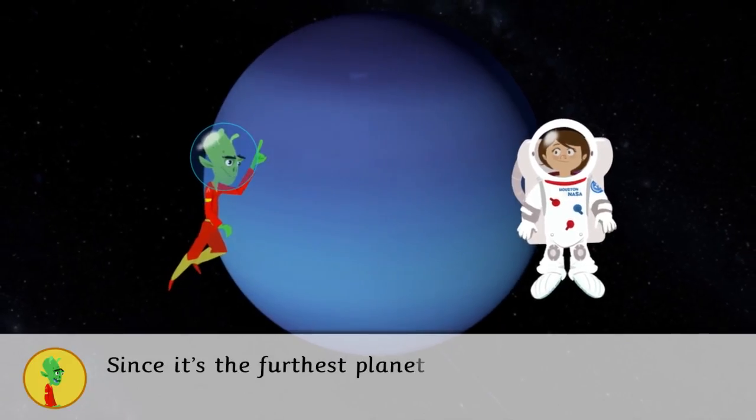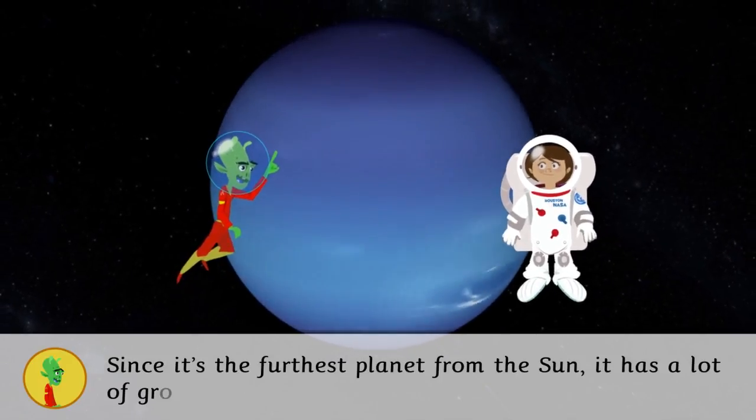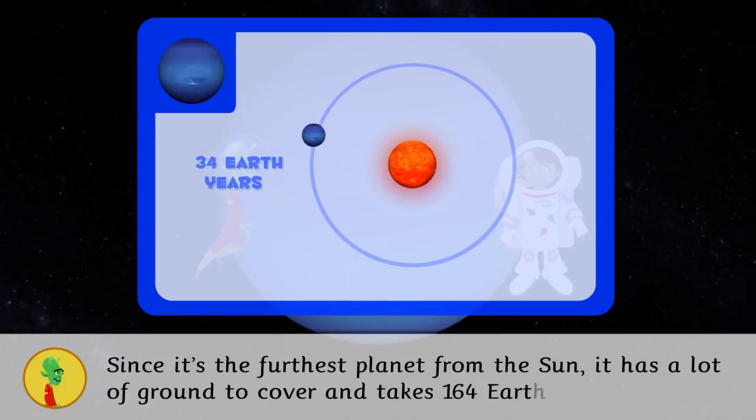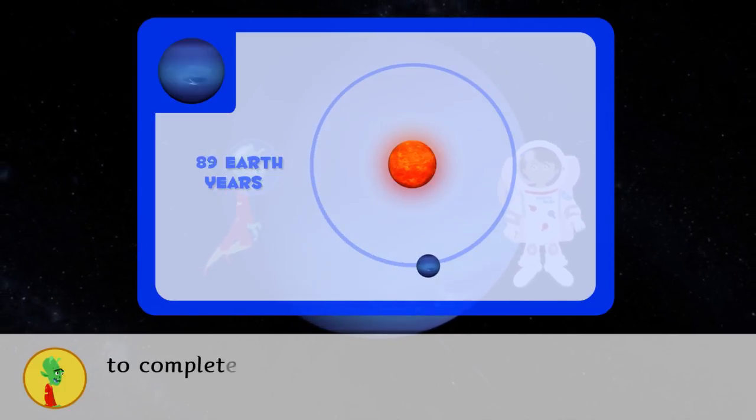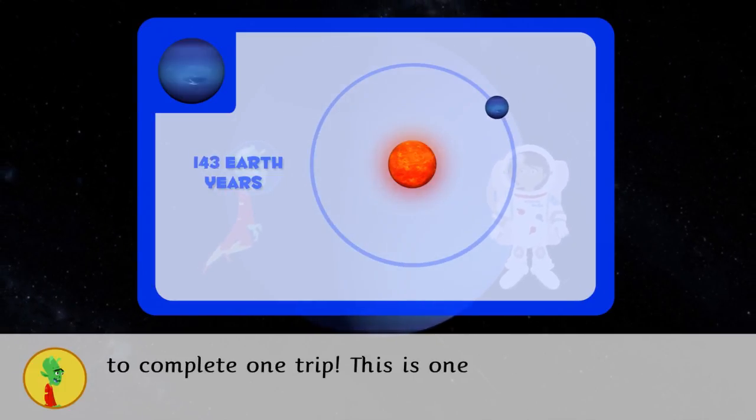Since it is the furthest planet from the Sun, it has a lot of ground to cover and takes 164 Earth years to complete one trip. This is one long year!